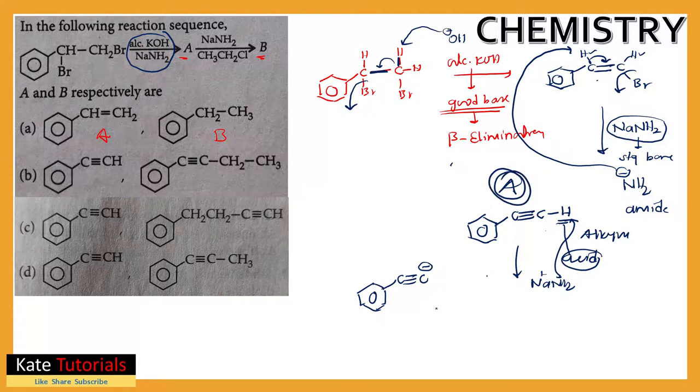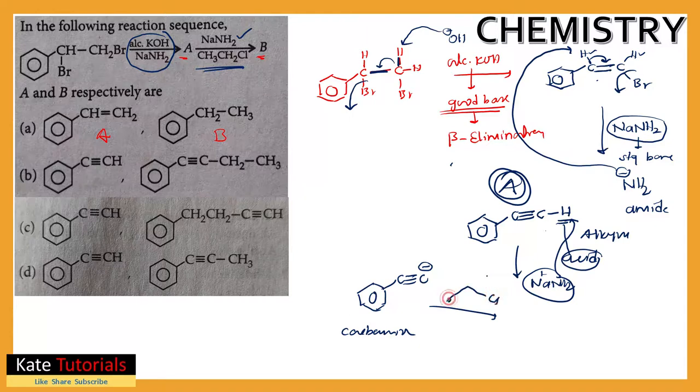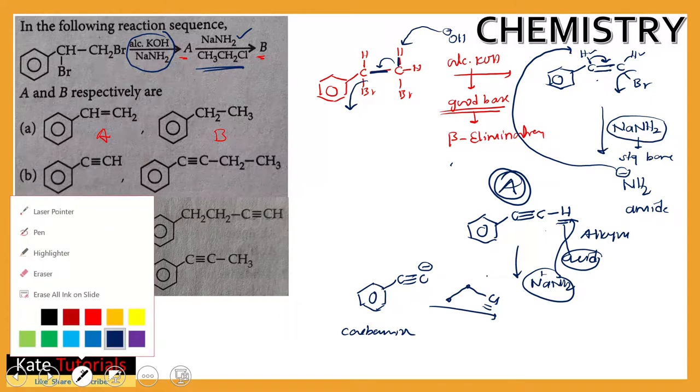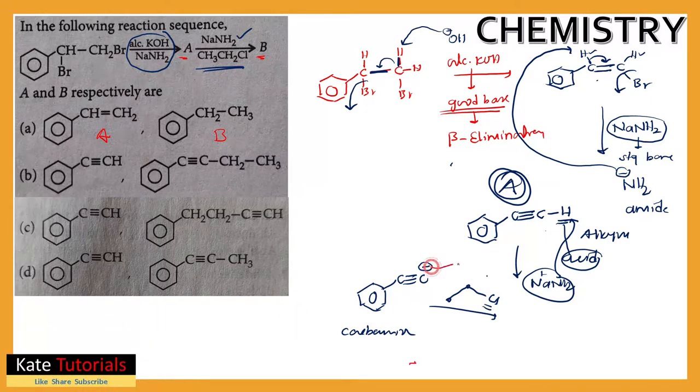Next, what they are adding: they are given NaNH2 in presence of CH3CH2Cl. So NaNH2 if they add, will lead to this carbanion. What is this? It is an intermediate carbanion. And here I will be having CH3CH2Cl - CH3CH2 and here I will be having Cl.